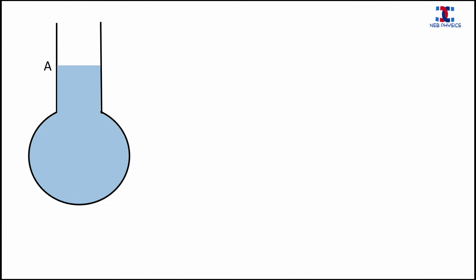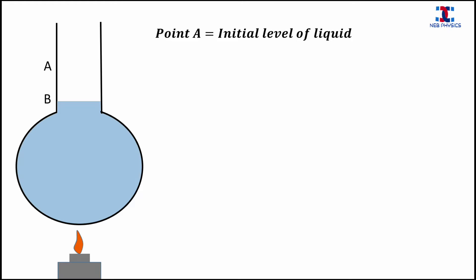Let us consider a vessel filled with a liquid. Here, point A represents the initial level of the liquid. When the heat is supplied for some time, the vessel expands before the liquid, and because of this, the level of liquid falls down from point A to point B.